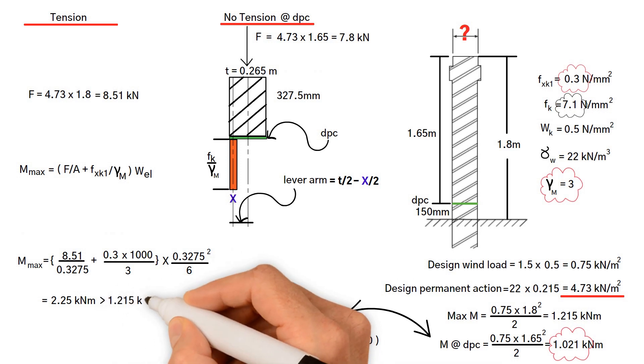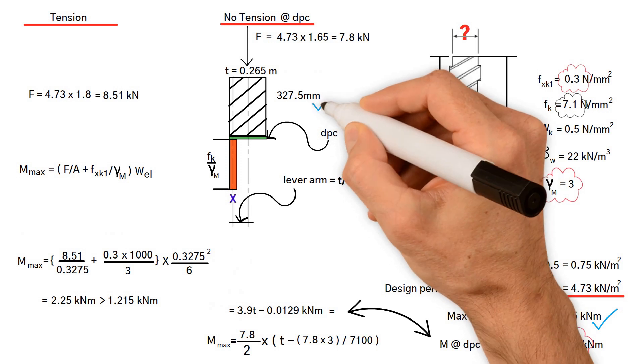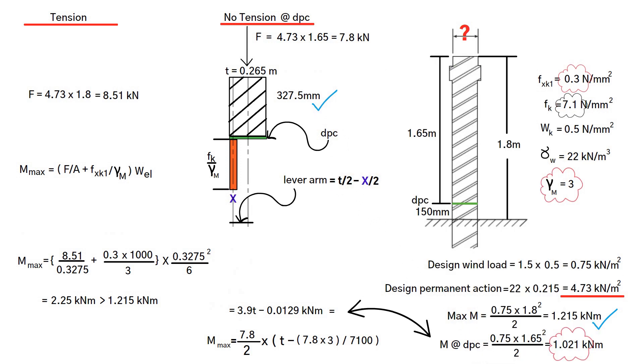This results in a value of 2.25 kilonewton meter, which is greater than 1.215 kilonewton meter. As a result, use a 0.3275 millimeters thick wall.